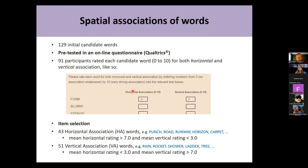What participants saw in Qualtrics was a list of words, and next to each word there was a text box for horizontal association — type in a number from 0 to 10 — and a text box for vertical association, from 0 to 10, representing spatial association, where 0 represents no association with that dimension and 10 a very strong association. We did it this way because some words like Bannister score quite high on both dimensions, so we wanted to separate them out.